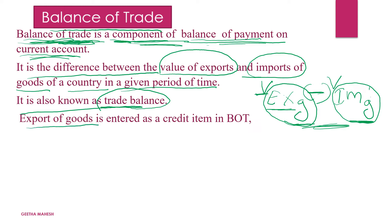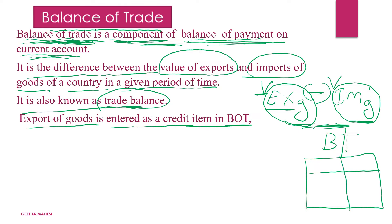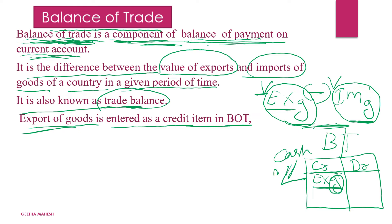Export of goods is entered as a credit item in the balance of trade. In the balance of trade record, one side is credit. Export of goods is entered on the credit side because when you export goods, you receive cash — cash will flow inside. So what comes in should be entered under the credit side.